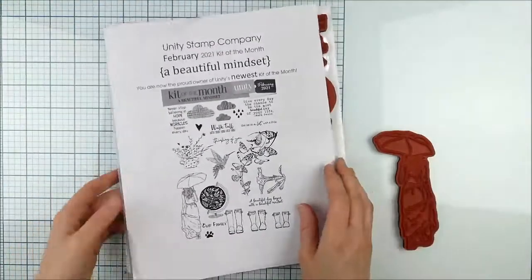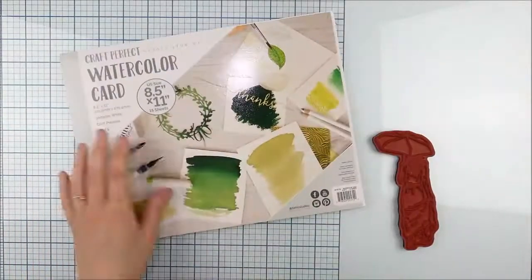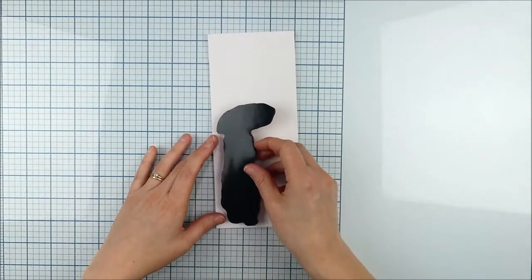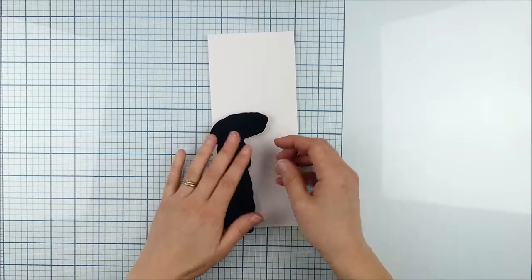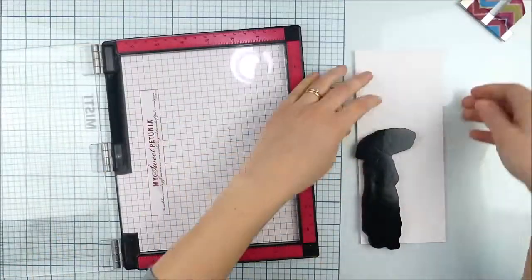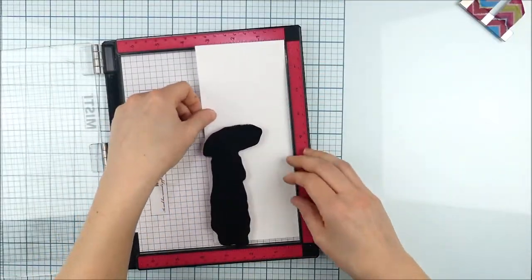I just love that fun girl with the umbrella and I thought it was a perfect fit for a slimline card. So I'm starting off with that image. I've already trimmed a panel of just some nice bright white watercolor paper down to a slimline size. I believe I trimmed this to